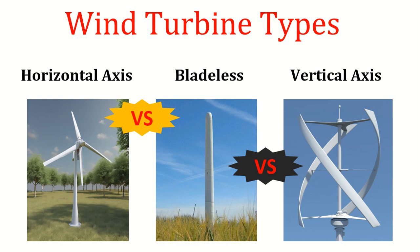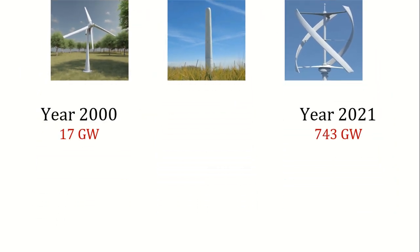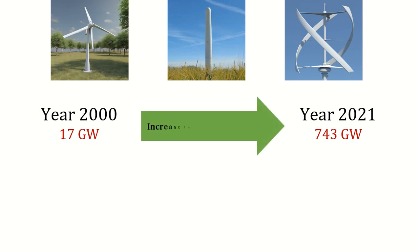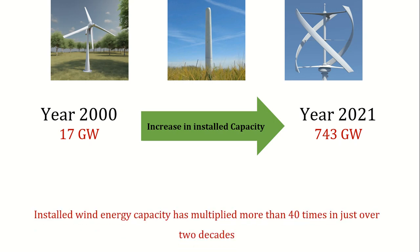Wind turbines have revolutionized electricity generation by harnessing the power of wind, providing a renewable source of clean energy. As of 2021, the global installed capacity of wind energy has exceeded 743 gigawatts, a remarkable growth from around 17 gigawatts in 2000, which means it has multiplied more than 40 times in just over two decades.